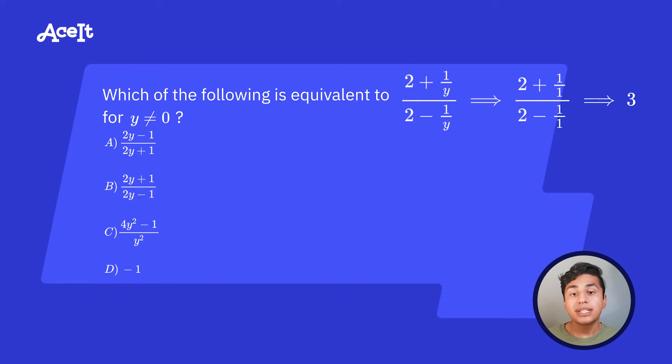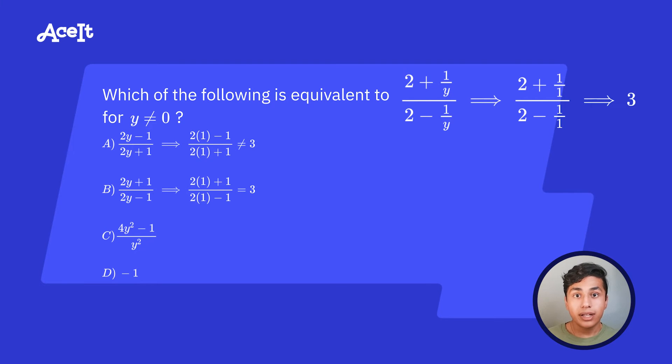So now let's plug in 1 for each of the answer choices and see what those give us. So A will give us 1 third, which isn't 3, so we're going to move on to B and try plugging in 1. So when we plug in 1 for answer choice B, we're going to end up with 3. So that's how we know the answer in this case is B.